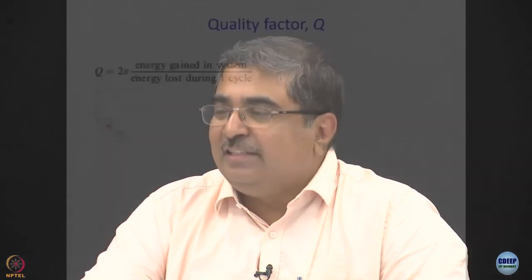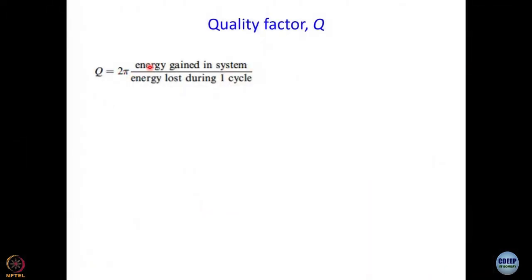Q is quality factor. Q for quality. And it is defined like this: 2 pi multiplied by energy gained in the system divided by energy lost during one cycle. Why will energy gain be there? In a laser, I am talking about laser of course. What is the mechanism by which energy gain can take place? And when I talk about Q, I am talking about the cavity.